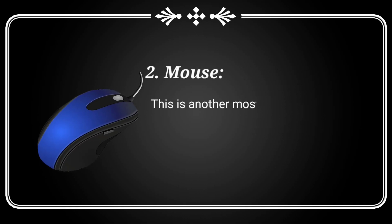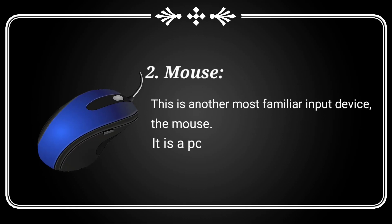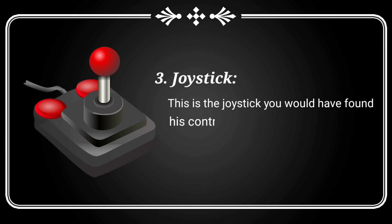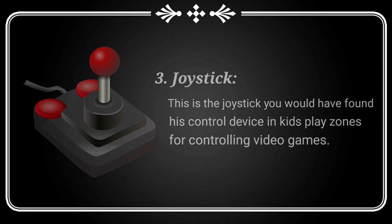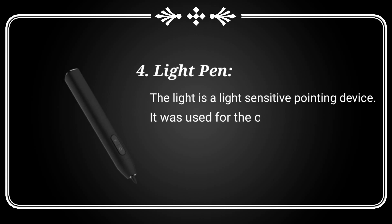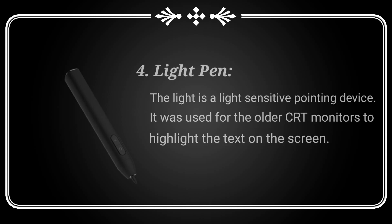Mouse — this is another most familiar input device. It is a pointing device that controls the cursor. Joystick — you would have found this control device in kids' play zones for controlling video games. Light pen — the light pen is a light-sensitive pointing device. It was used for older CRT monitors to highlight text on the screen.